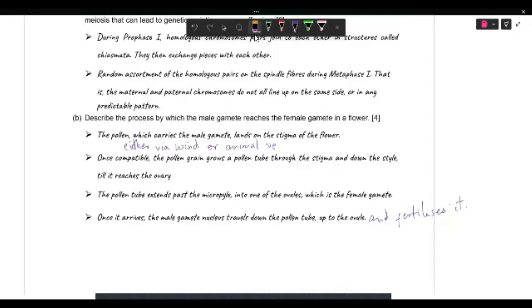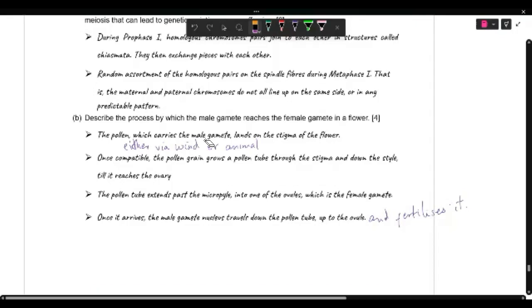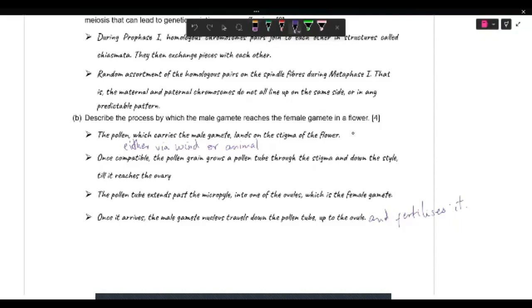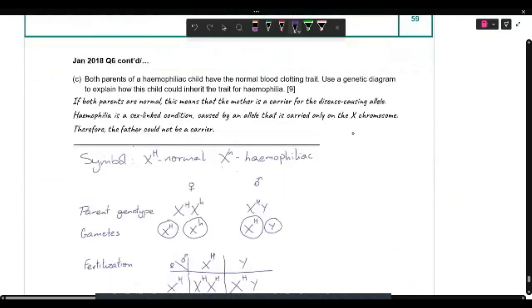You can mention that it gets there either via wind or animal. Via wind or animals. So whether it's an insect, a butterfly, a bird, it will carry the pollen to the other flower. Or just good old-fashioned wind blowing and taking the pollen grain with it. So that's how it ends up on the stigma of the flower.